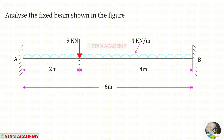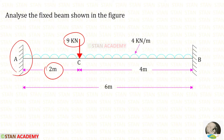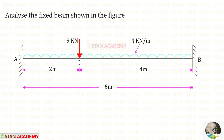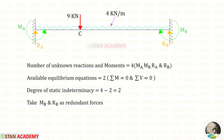Hello everyone. Today we are going to analyze a fixed beam using the strain energy method. In this beam there are two loads: one point load of 9 kilo newton acting at a distance of 2 meters from point A, and a uniformly distributed load of 4 kilo newton per meter acting for the whole span. The length of the beam is 6 meters.